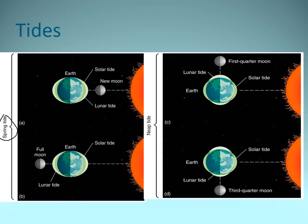However, when it's first quarter or third quarter moon, the sun and the moon act not together but sort of in opposition. So our high tides aren't really high and our low tides aren't that low — we have a minimal tidal range and we call those neap tides.